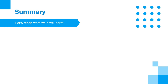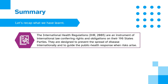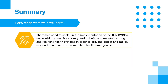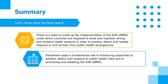Let's recap what we have learnt. The International Health Regulations are an instrument of international law, conferring rights and obligations on their 196 states parties. They are designed to prevent the spread of disease internationally and to guide the public health response when risks arise. Health emergencies continue to have a significant and sometimes catastrophic impact on countries' economies and development and on the health of their people. There is a need to scale up the implementation of the IHR, under which countries are required to build and maintain strong and resilient health systems in order to prevent, detect and rapidly respond to and recover from public health emergencies. Parliament plays a fundamental role in enhancing capacities to prevent, detect and respond to public health risks and in promoting and adopting the IHR.